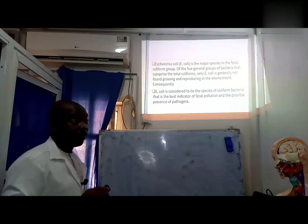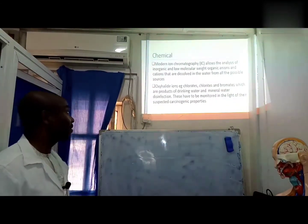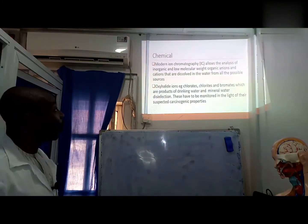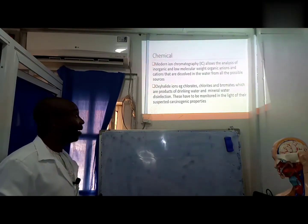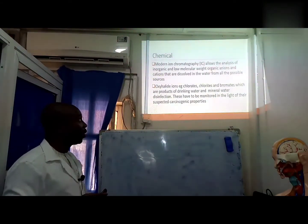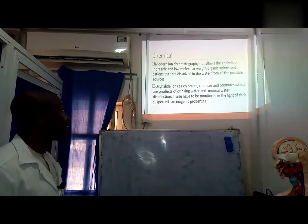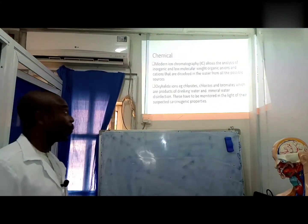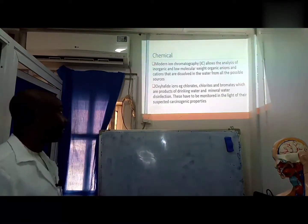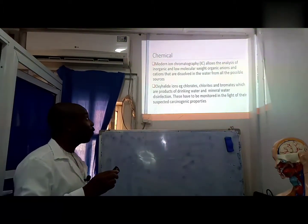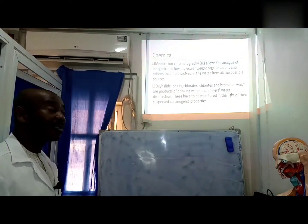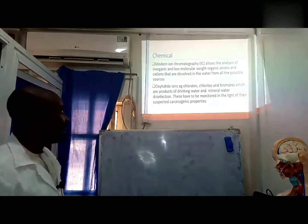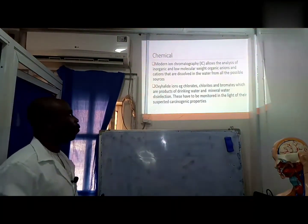We go to chemical analysis. In chemical analysis, we use modern ion chromatography to analyze for inorganic and low molecular weight organic anions and cations that are dissolved in water. With all the numerous pollutants that we talked about earlier, we found out that modern ion chromatography (IC) has given us stress-free analysis in water analysis, and so we need to have one in place.